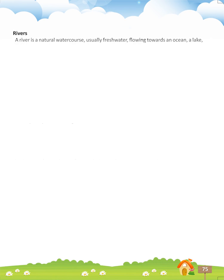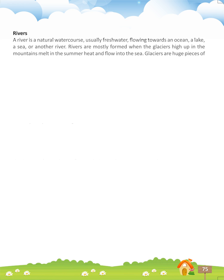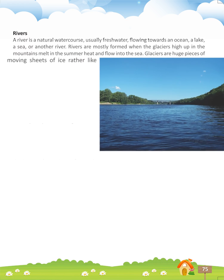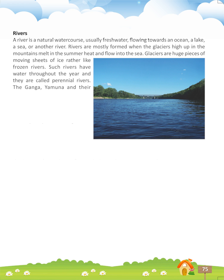A river is a natural water course, usually fresh water, flowing towards an ocean, a lake, a sea or another river. Rivers are mostly formed when the glaciers high up in the mountains melt in the summer heat and flow into the sea. Glaciers are huge pieces of moving sheets of ice, rather like frozen rivers. Such rivers have water throughout the year and they are called perennial rivers.